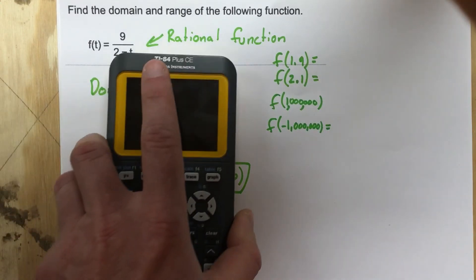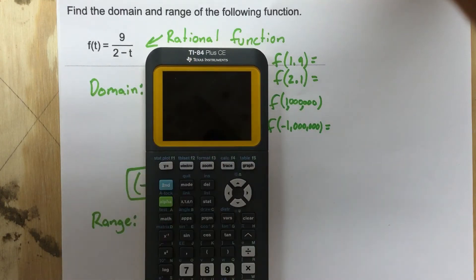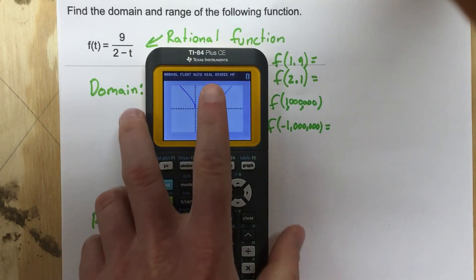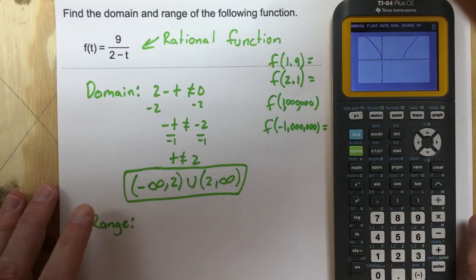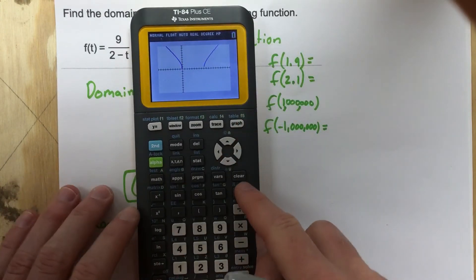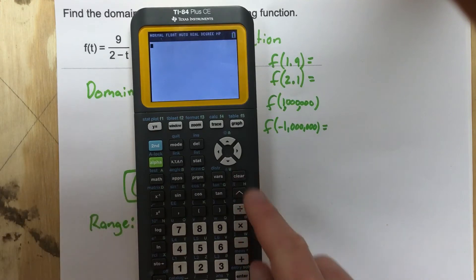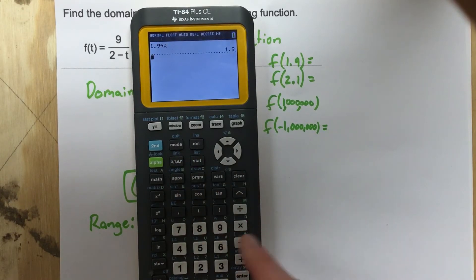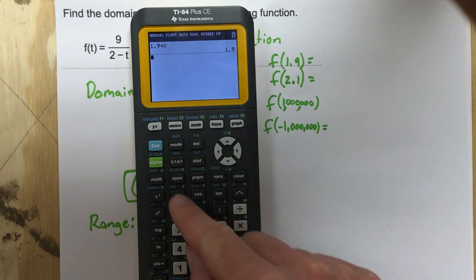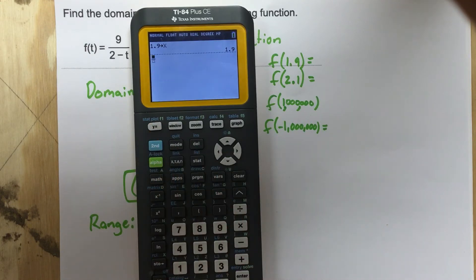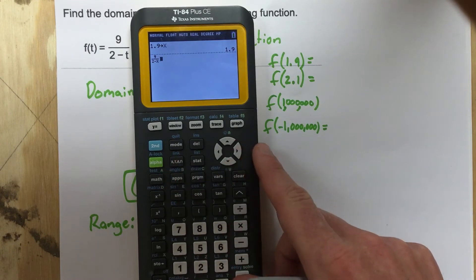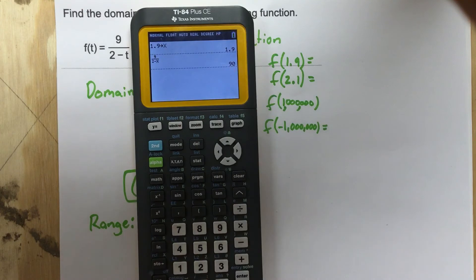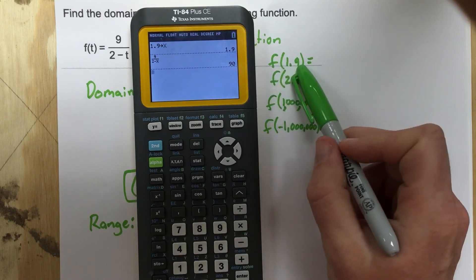We'll use the calculator to do this. It's pretty easy with the calculator because you can just use the store function, which is the bottom left. So we'll start by saying 1.9, store it as x. And then we're going to use the fraction button. And then we're going to say 9 over 2 minus x. Hit enter. That gives you 90. So f of 1.9 gives you 90.